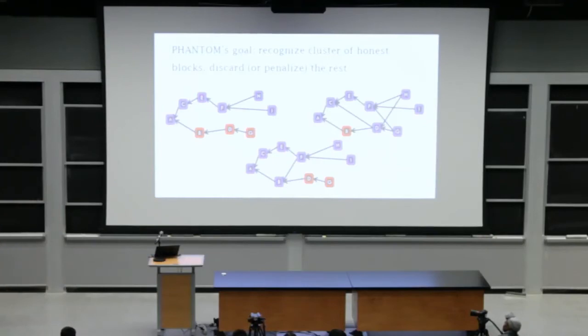But the bottom line is we want to understand and reason in an algorithmic manner. The protocol gets and views that dag and needs to decide with high probability, which blocks were mined by honest miners, which blocks were mined by an attacker, namely, which blocks are well connected to the dag, which blocks are disconnected from the dag. Okay. So here are a few examples.